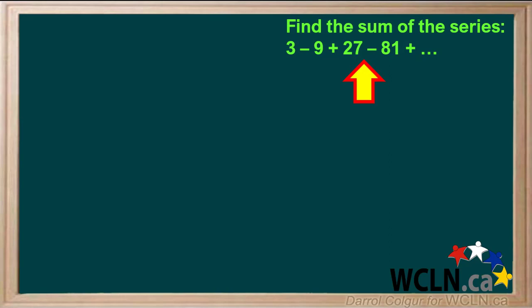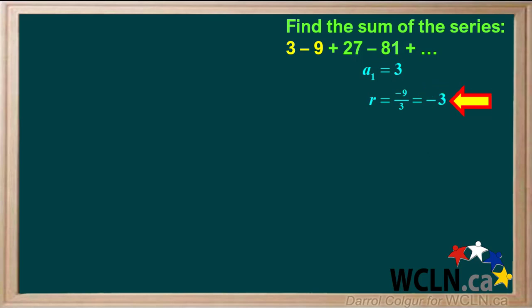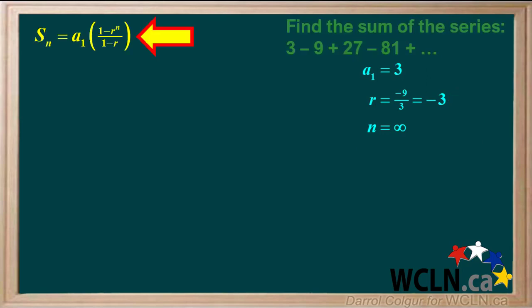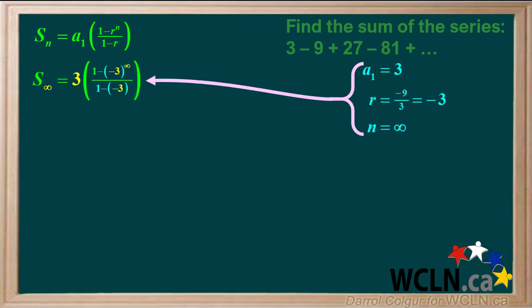We're asked to find the sum of this series. We see that a1 equals 3, r equals negative 9 over 3, which is equal to negative 3, and n equals infinity. This is an infinite series where r is less than negative 1, so it is a divergent series. We'll start with the equation for the sum of a geometric series. Now we'll substitute 3 for a1, negative 3 for r, and infinity for n.